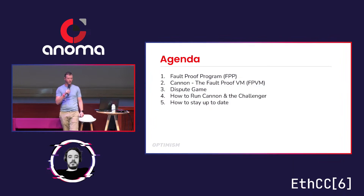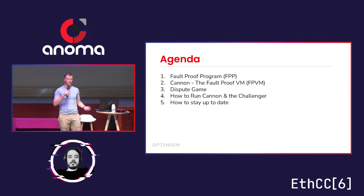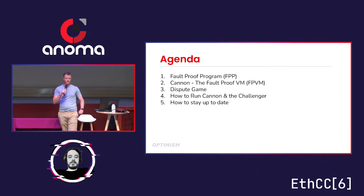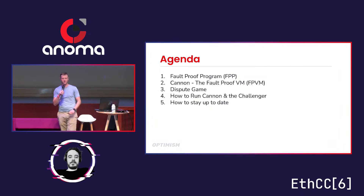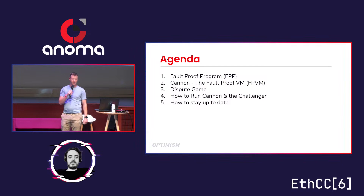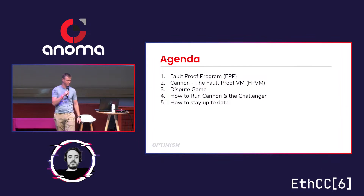Today's agenda: we're going to go through the three main components of our fault proof system — the fault proof program, Canon (which is our fault proof VM), and the dispute game, which ties them all together. Then I'll do some brief slides on running Canon in the Challenger, and brief information on how to stay up to date with all the work that we've been doing.